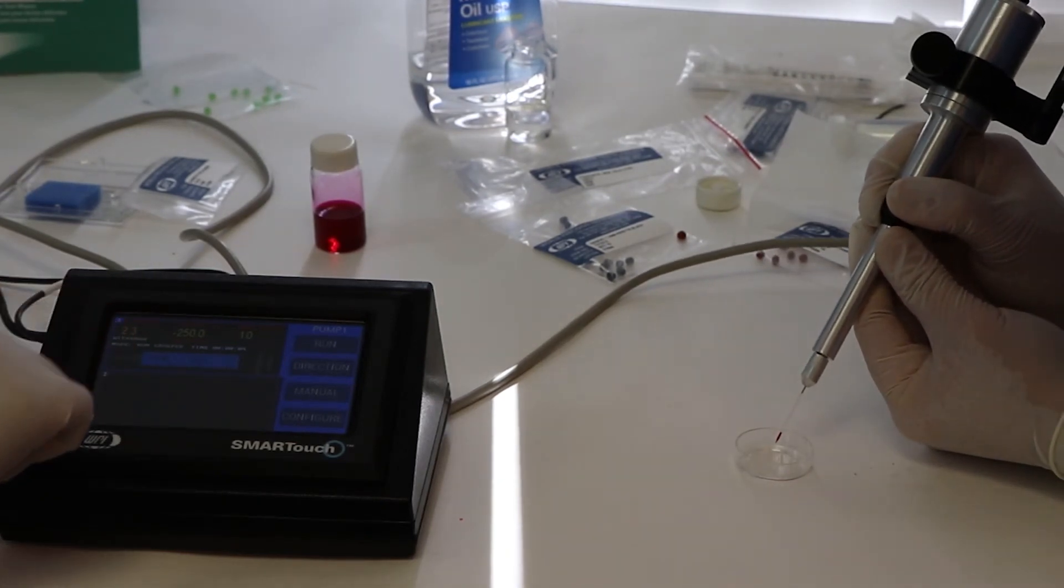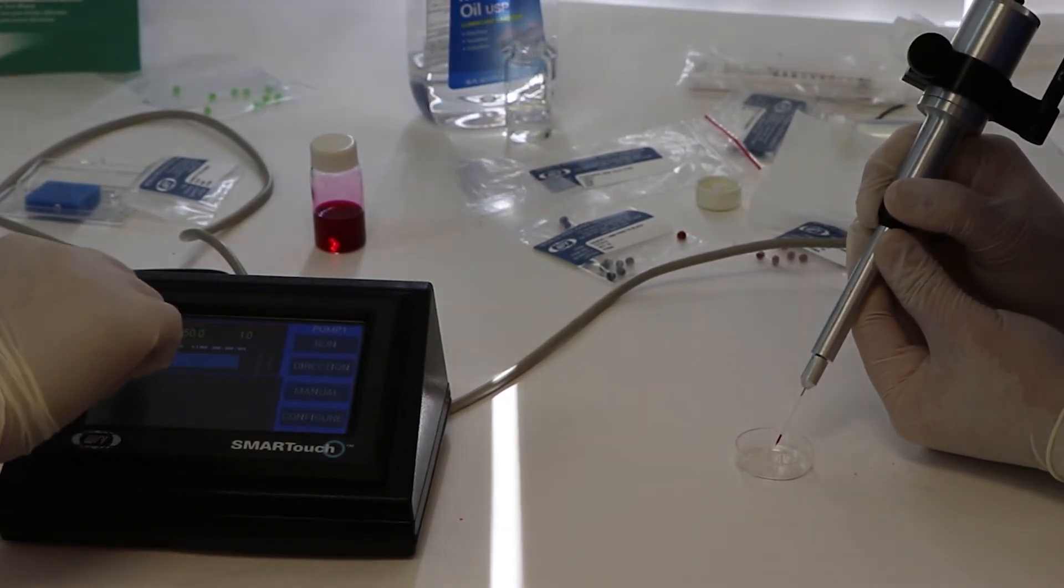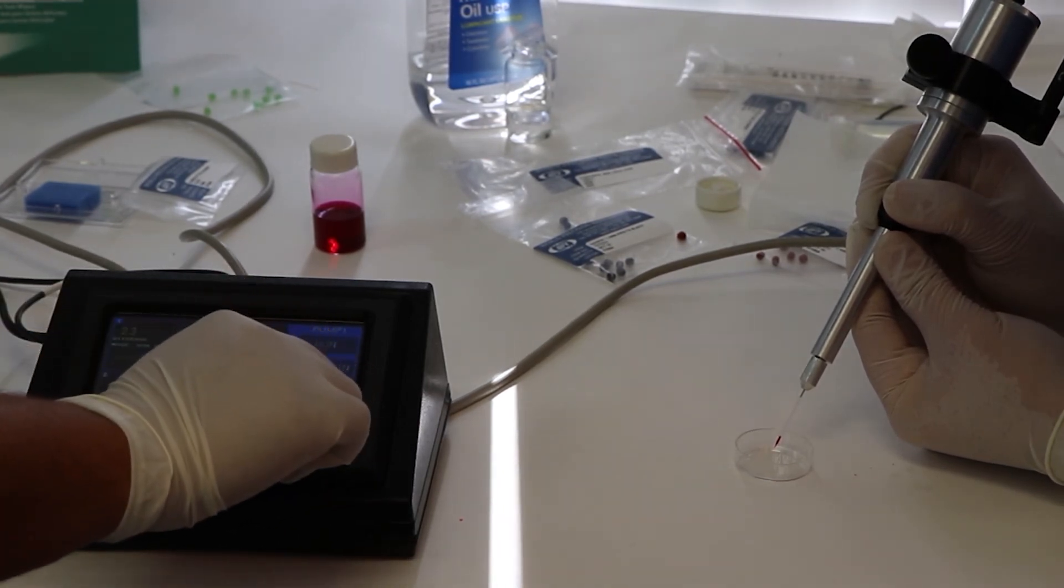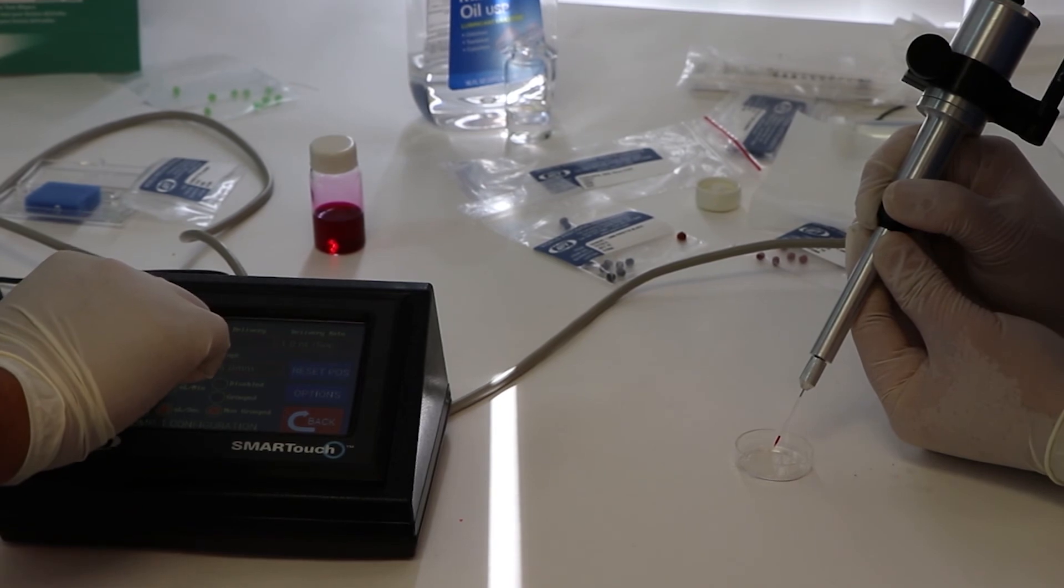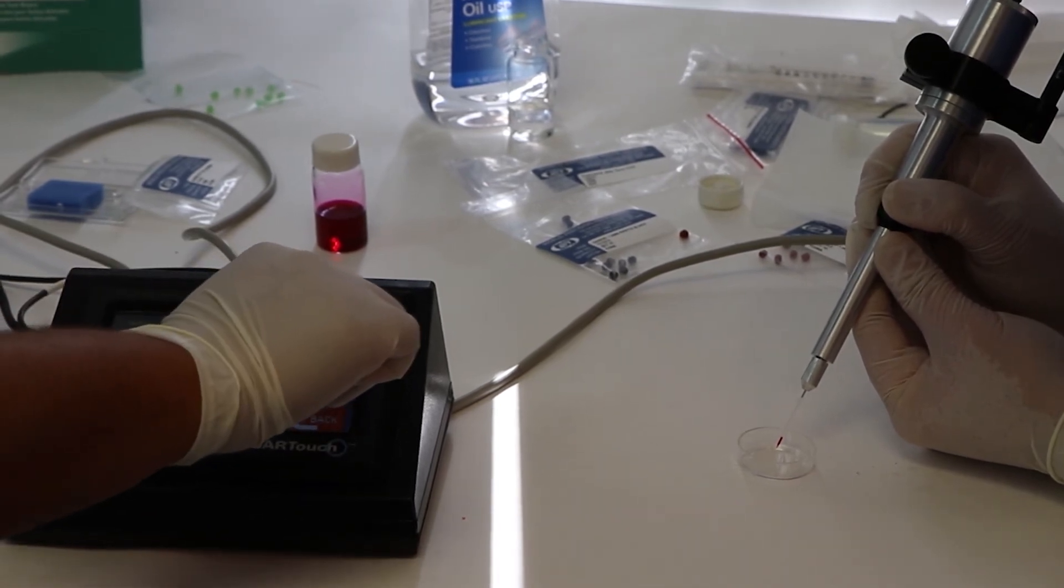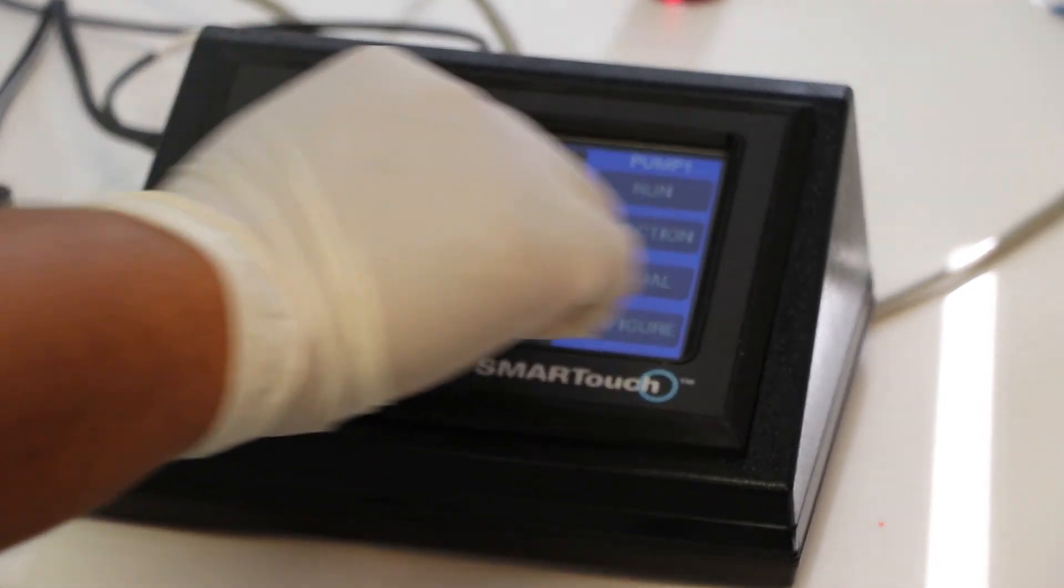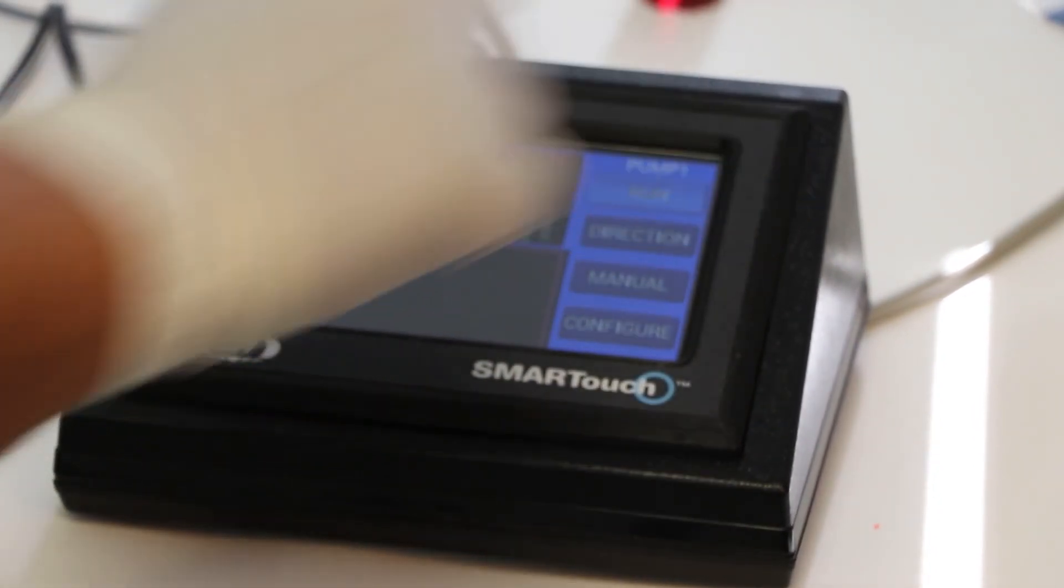So now we're ready to expel our sample. You're going to go and make sure that you have the setting that you want. Right now we have it at 2.3 nanoliters, dispensing at 1 nanoliter per second. When you hit back, make sure that you have your orientation right and hit run or hit the foot switch.